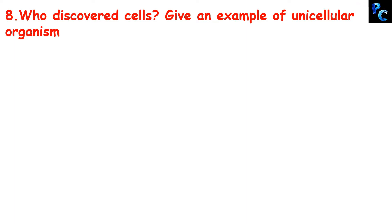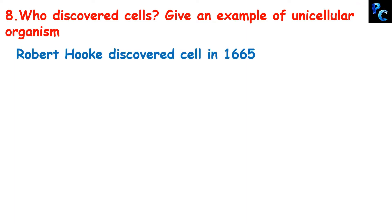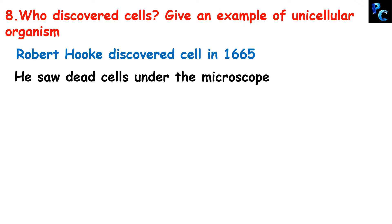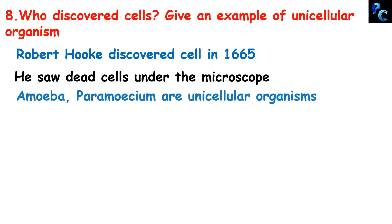Who discovered the cell? Give an example of a unicellular organism. Robert Hooke discovered the cell in 1665, but remember he saw dead cells under the microscope. Examples of unicellular organisms are amoeba and paramecium.